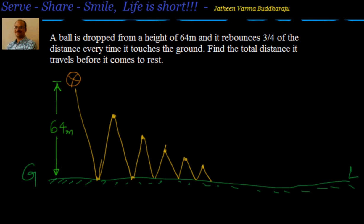Let's put it in numbers. The first distance is 64 meters. The first rebound is nothing but 64 × (3/4). When it touches the ground it rebounds 3/4 of the distance, so this becomes 64 × (3/4). Then due to gravity the ball comes back down the same distance, 64 × (3/4).